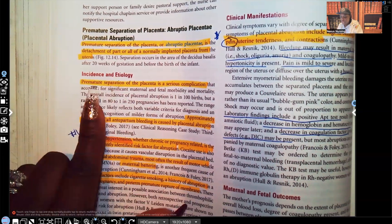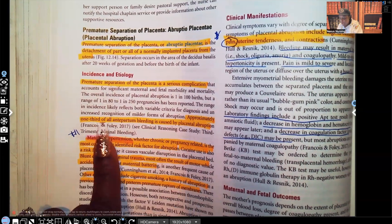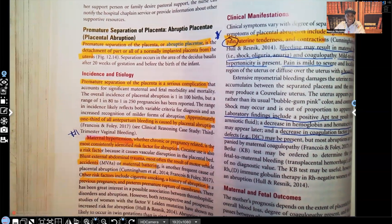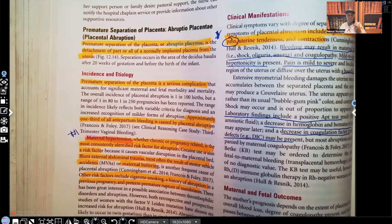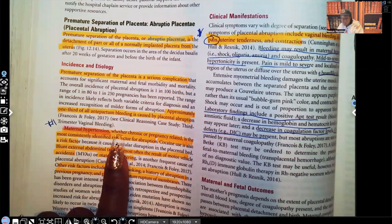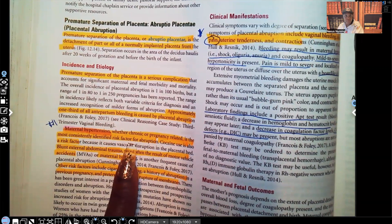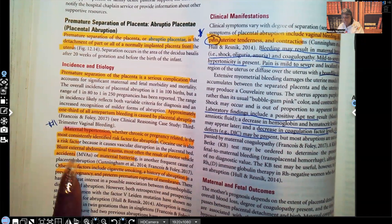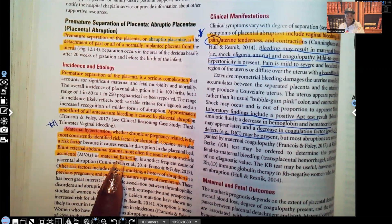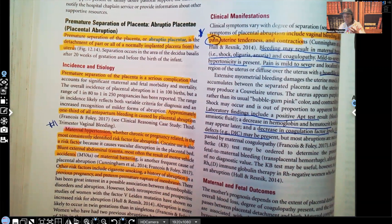In incidence and etiology, premature separation of the placenta is a serious complication. Approximately one third of all antepartum bleeding is caused by placental abruption. Mom can bleed to death. This is very serious. The number one risk factor for a placental abruption is maternal hypertension, whether chronic or pregnancy related. This is most consistently identified risk factor for abruption. Cocaine is also a risk factor. Blunt external abdominal trauma, usually from an MVA or maternal battering, domestic battering, someone punches her in the stomach.